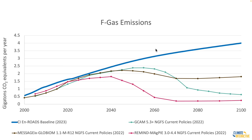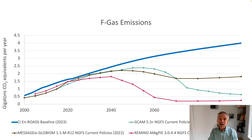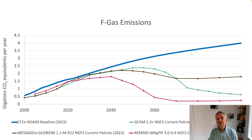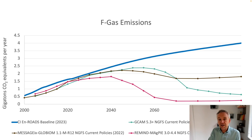Another result: for fluorinated gases — SF6, HFCs, and others — the integrated assessment model scenarios show a reduction, perhaps from global policy out there to reduce F gases. We're not assuming that those policies reduce emissions and we have them growing. You can reduce those emissions in the simulator if you want to replicate something closer to these scenarios.